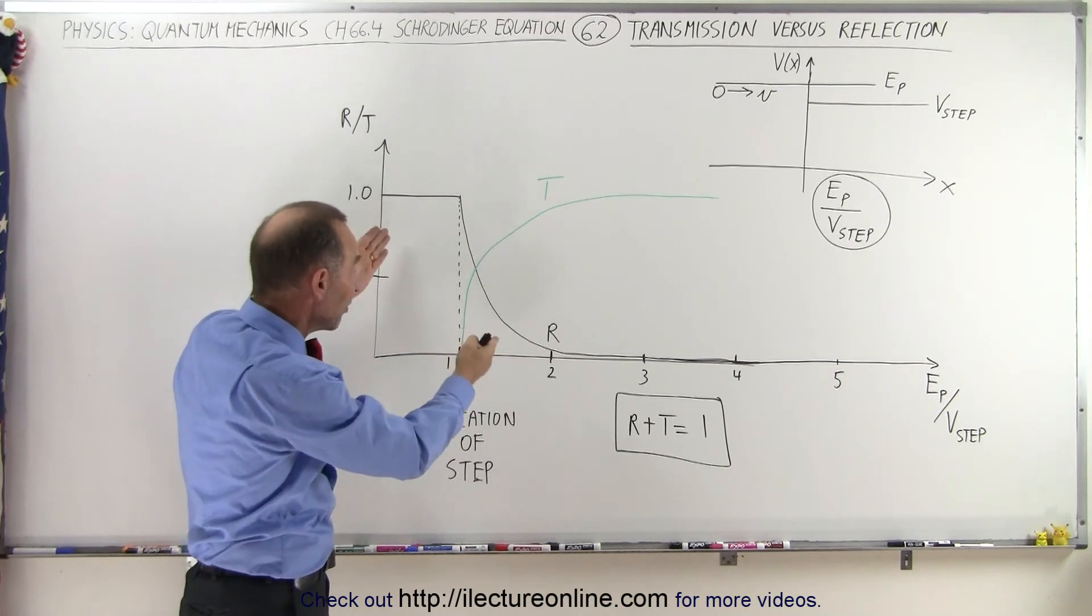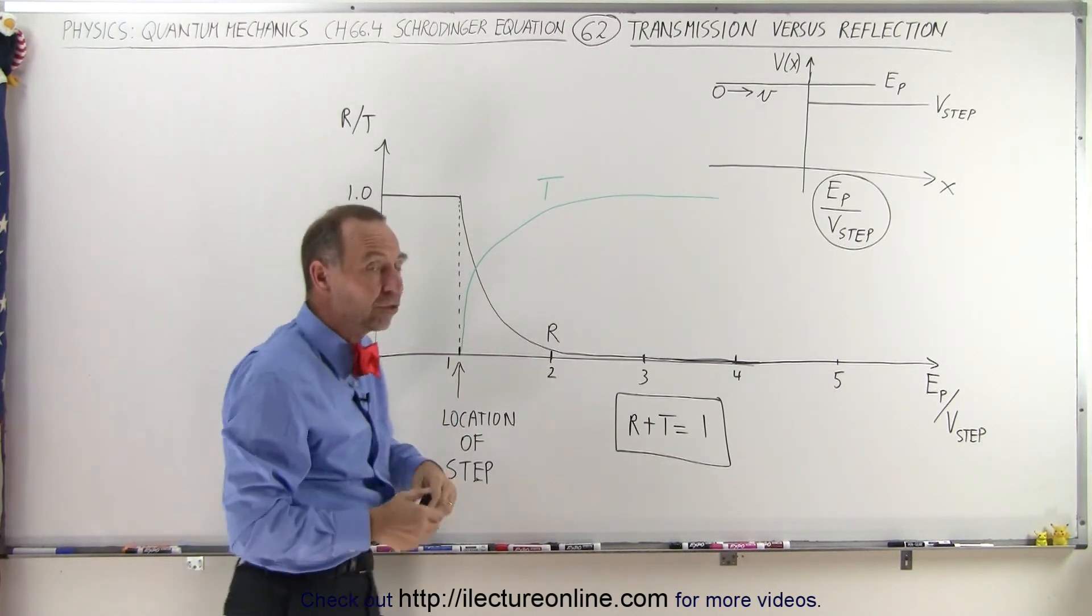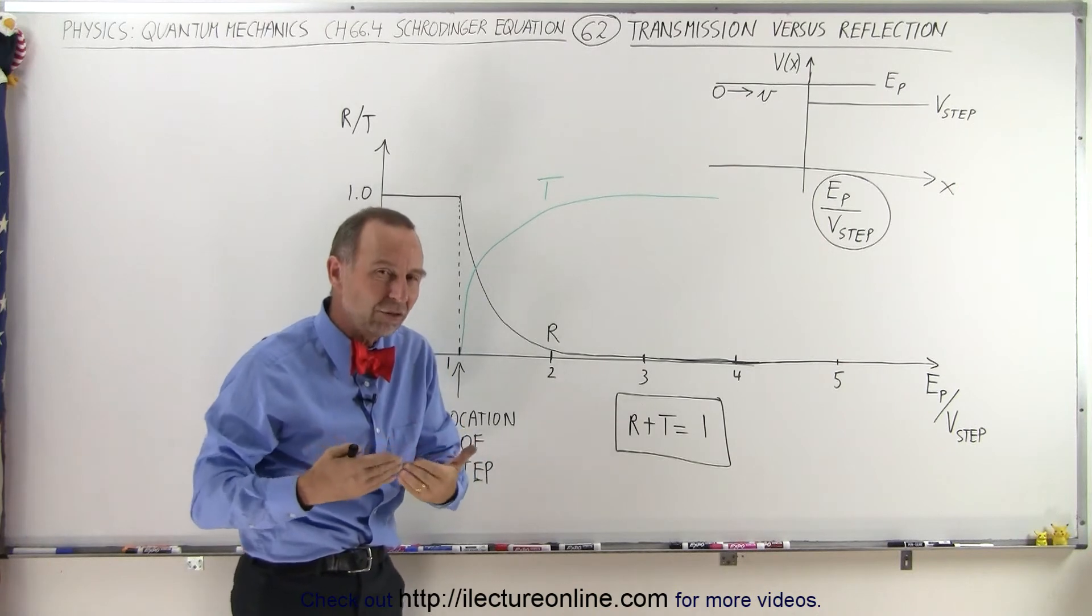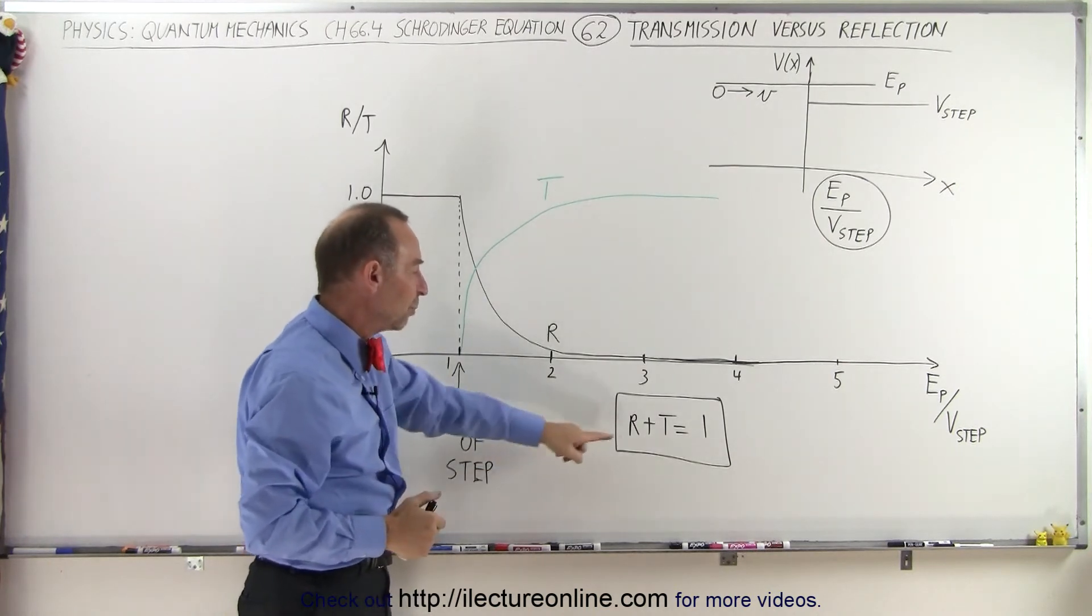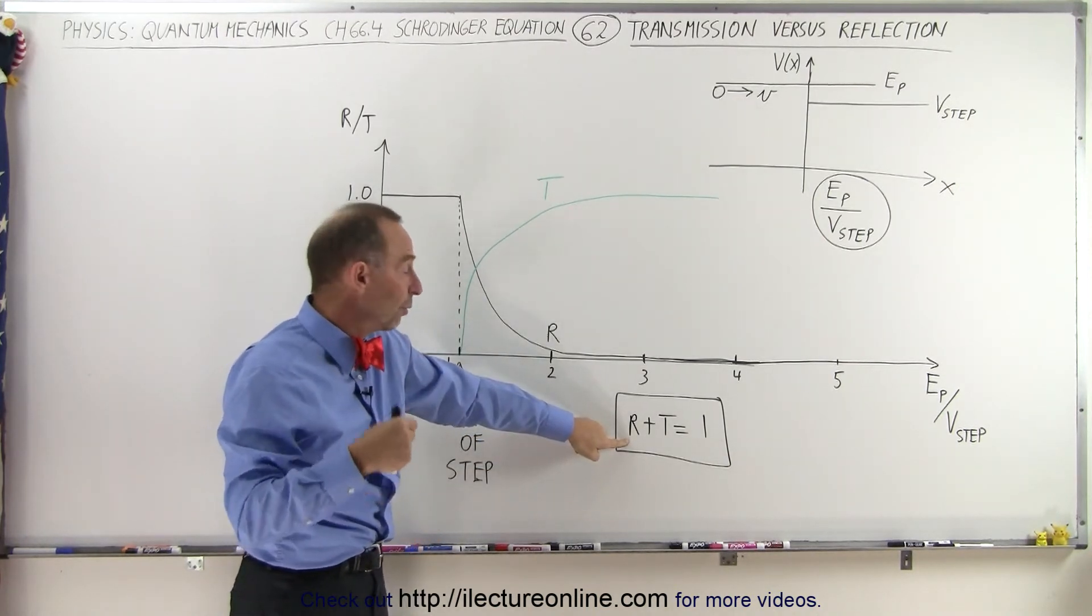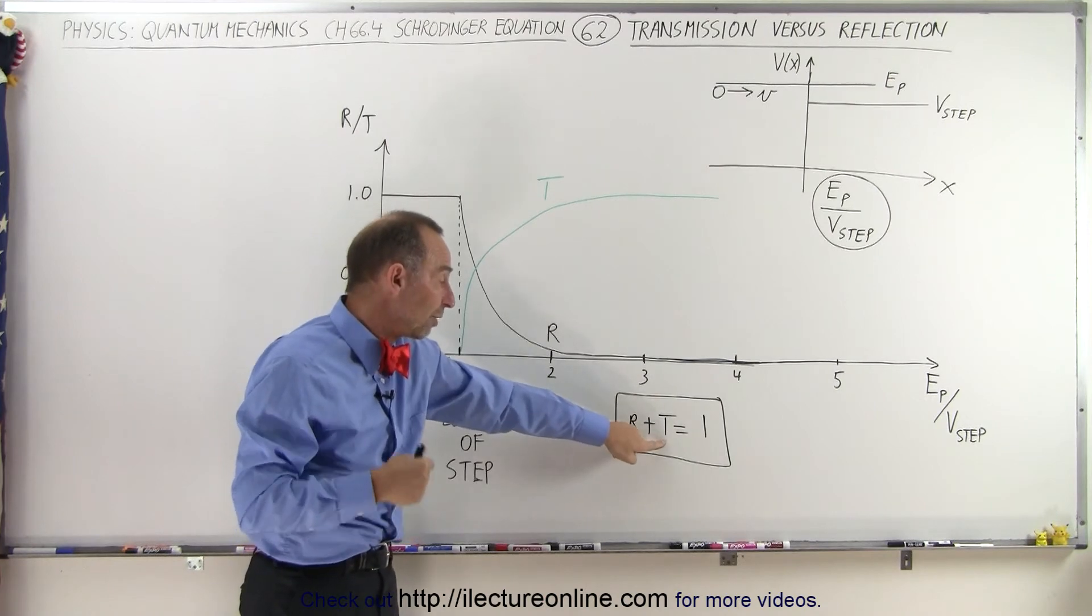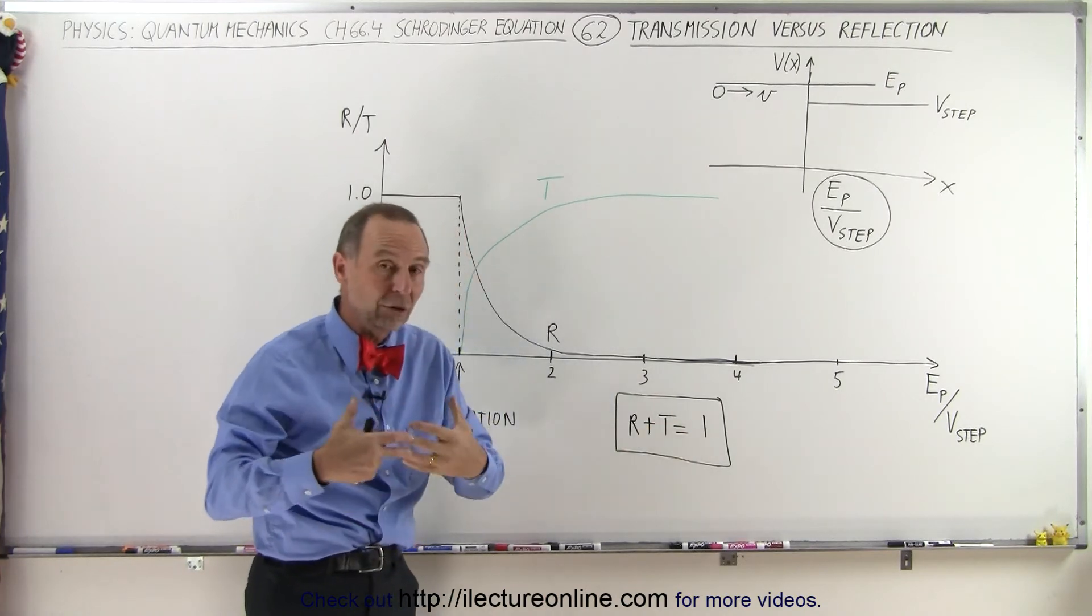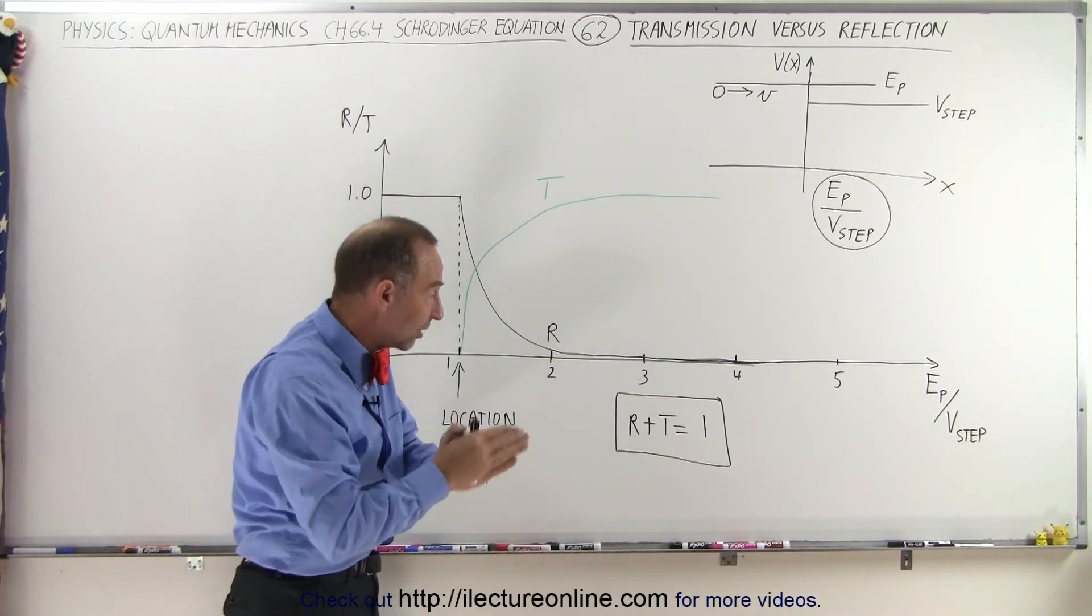So this is actually a very nice representation. Also, keep in mind, just like in electricity and magnetism with wave reflection, wave transmission, that the total reflected waves plus the total transmitted waves always have to equal 1. The total probability of the two combined is equal to 1.